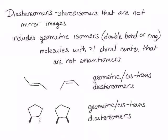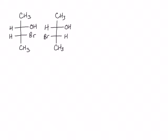However, the definition of diastereomers also includes molecules we haven't talked about yet, such as these two molecules. These two molecules are related — they are stereoisomers of one another, but they are not mirror image stereoisomers. Therefore, they are diastereomers.